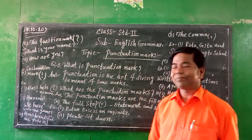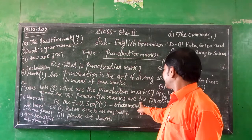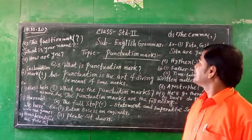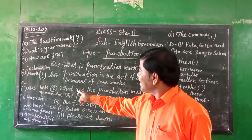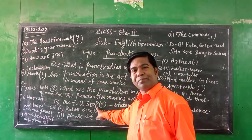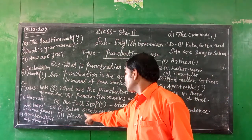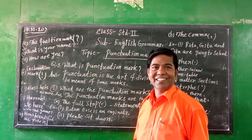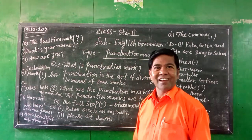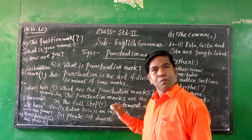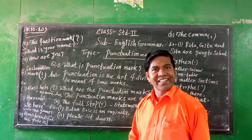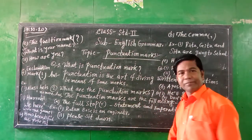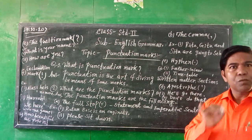What are the punctuation marks? The punctuation marks are the following. Number one: the full stop. For example, Ram is the best boy in our class. He is a good boy. She is a good girl. We use a full stop at the end of a statement or imperative sentence.